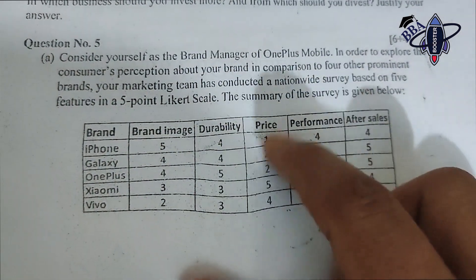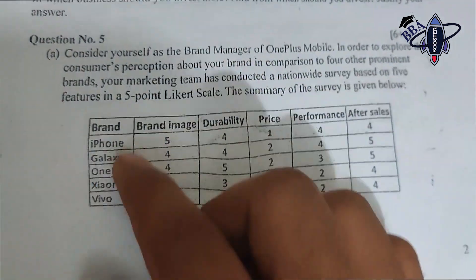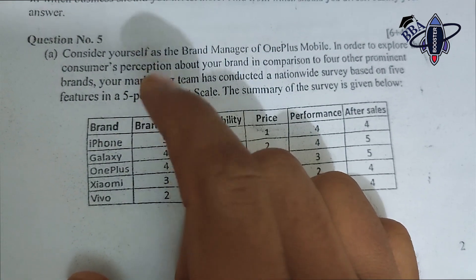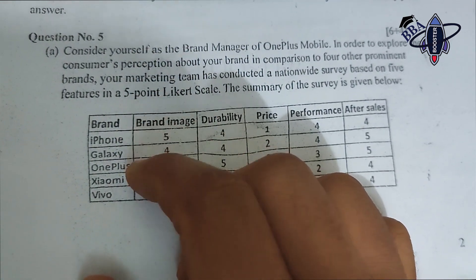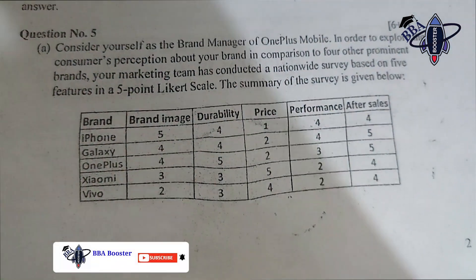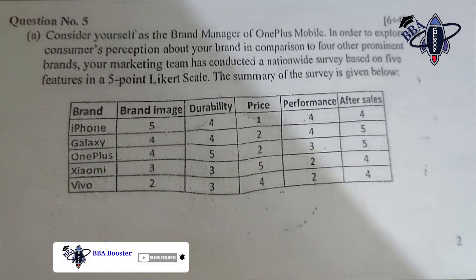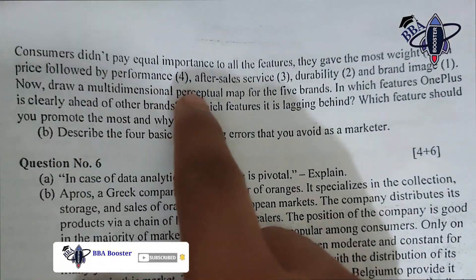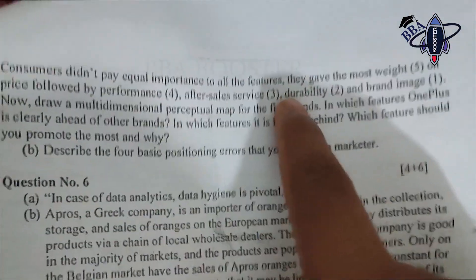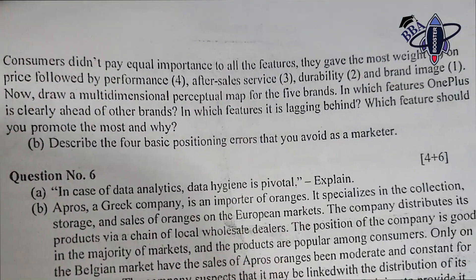The five features are: brand image, durability, price, performance, and after-sales. The four competitor brands are iPhone, Galaxy, OnePlus, Xiaomi, and Vivo. Consumers did not pay equal importance to all the features.